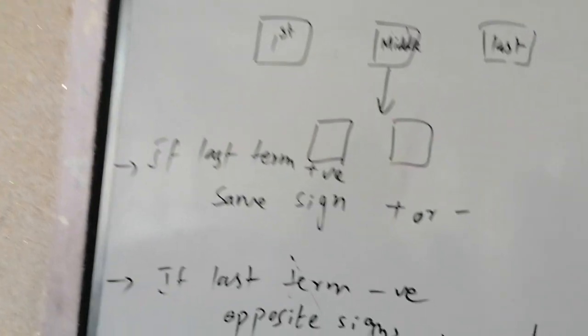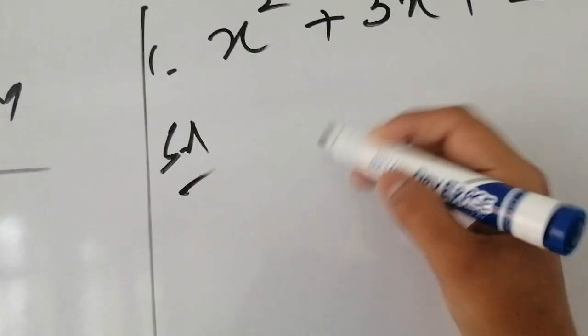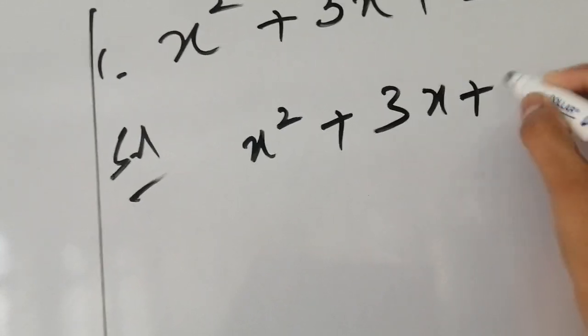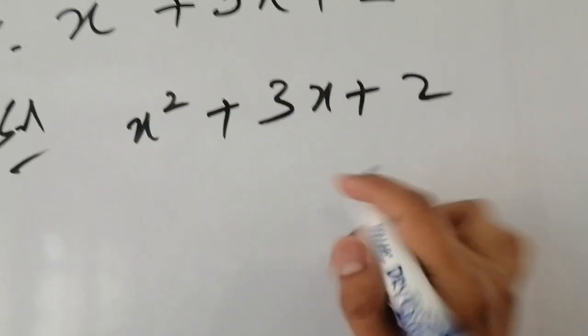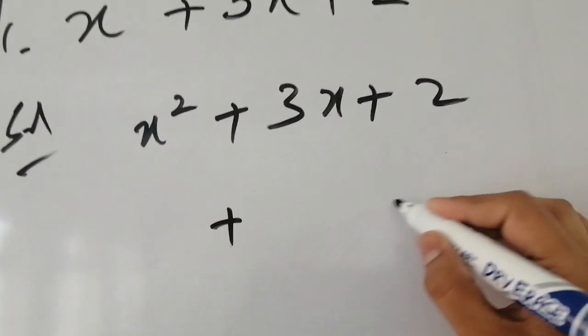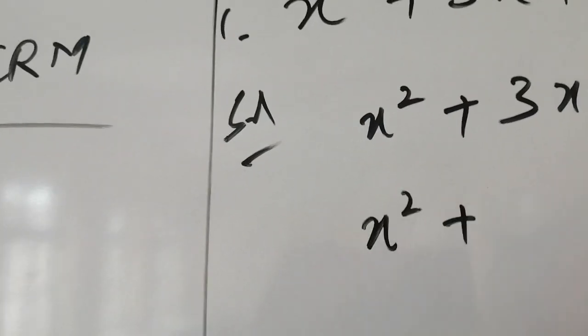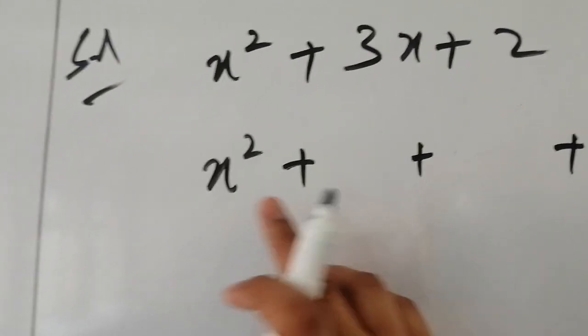Now I will confirm this with examples. First I will give an example where the last term is positive. Let's solve this example: x² + 3x + 2. Since the last term is positive, the two terms will have the same sign — which will be plus.